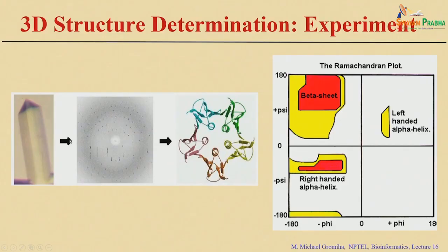To summarize X-ray crystallography: first we need to get the crystal, obtain the diffraction pattern, process the data, and finally get the 3D structures. Then we check the quality of these 3D structures and validate them using various methods.